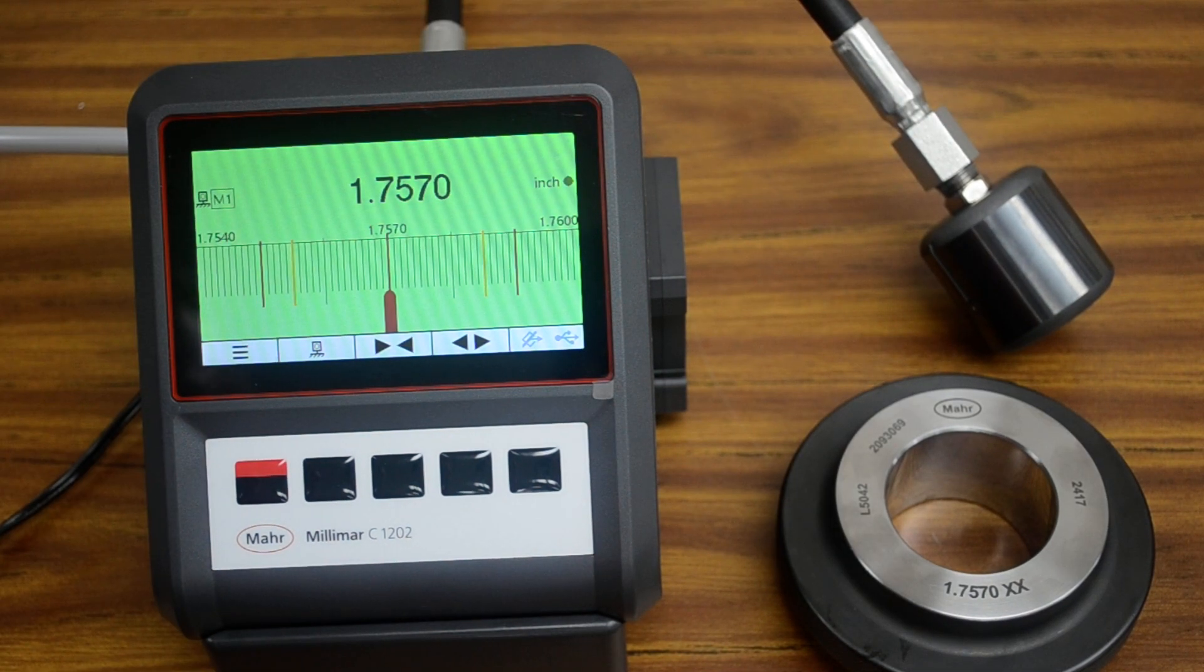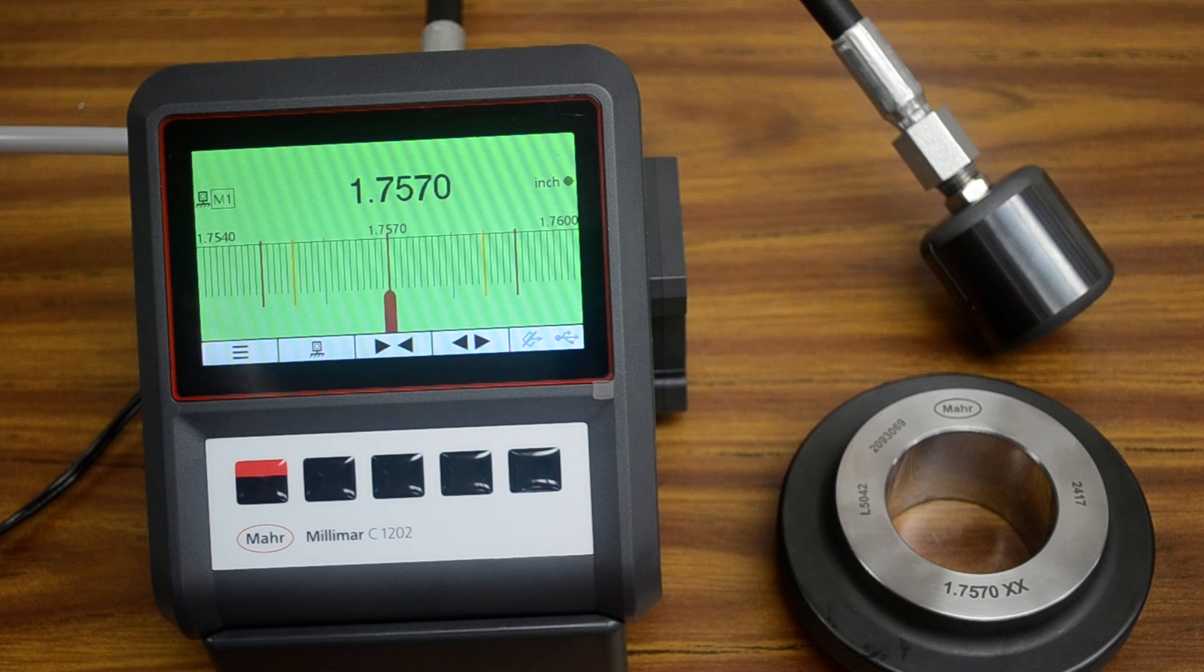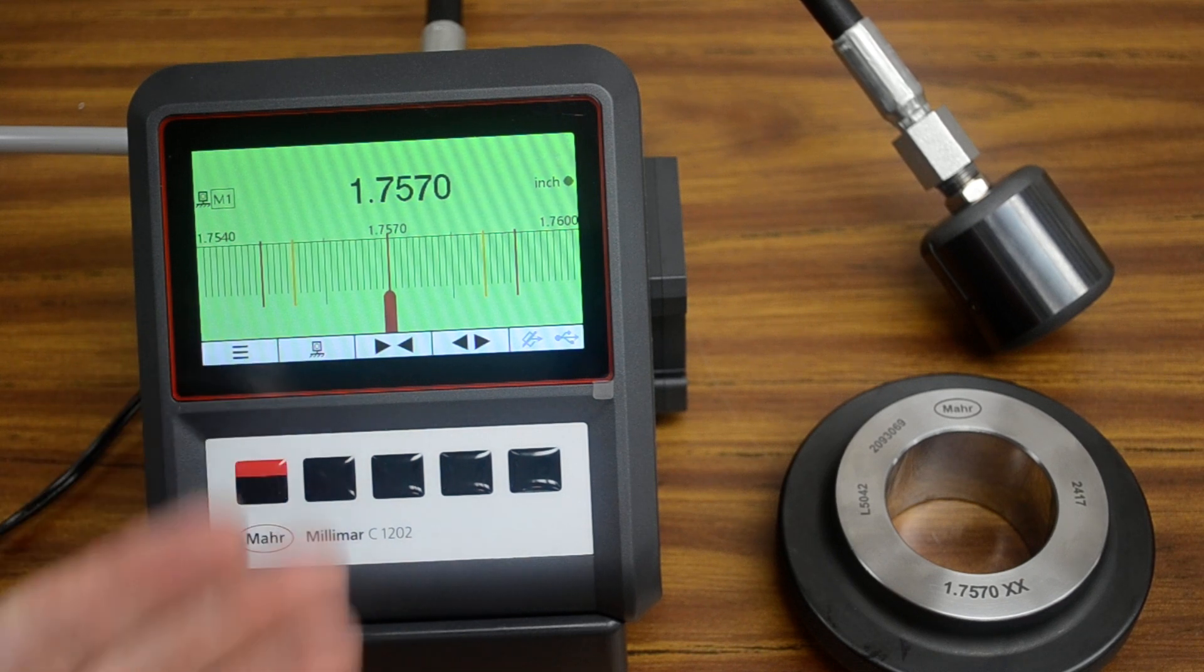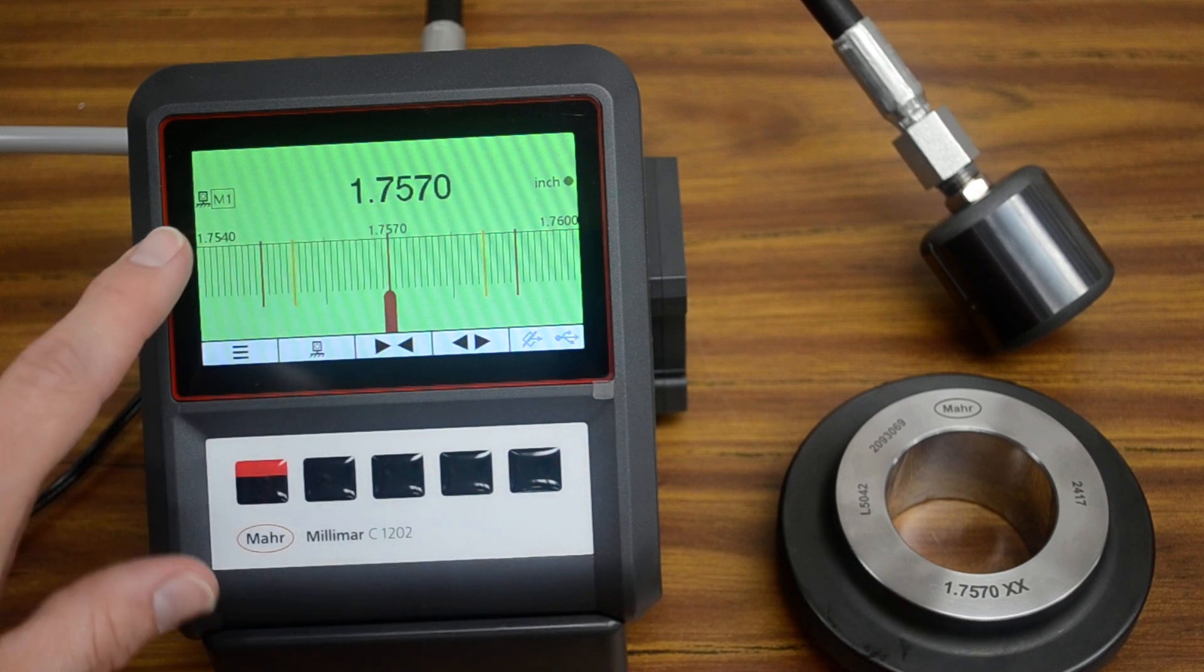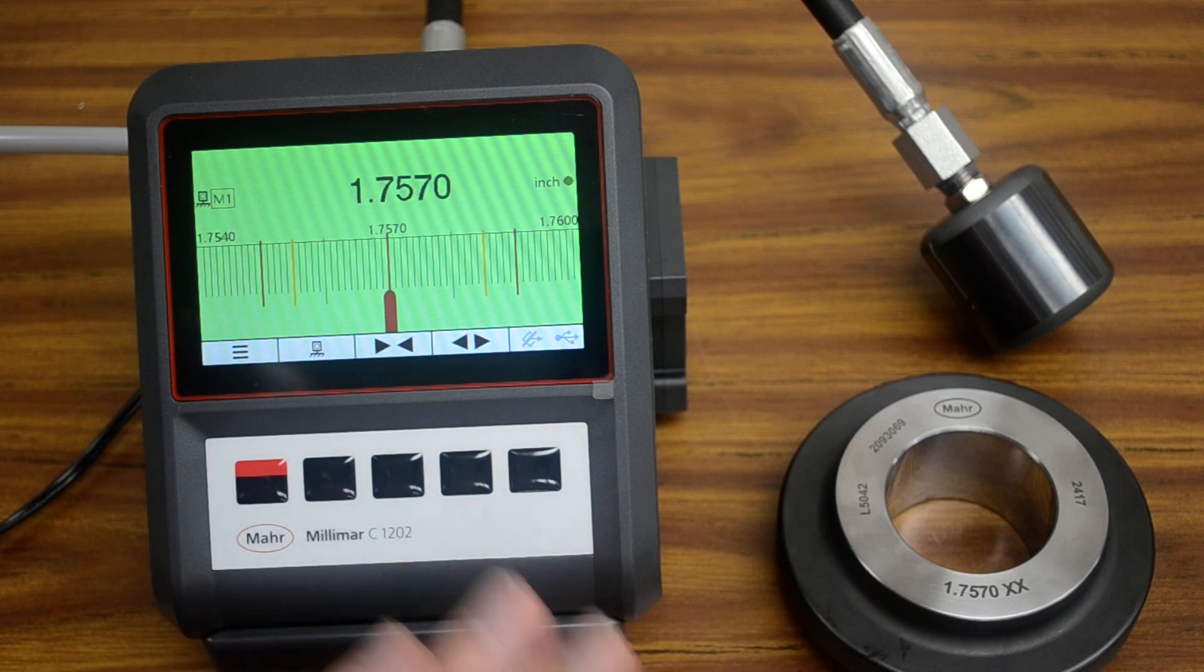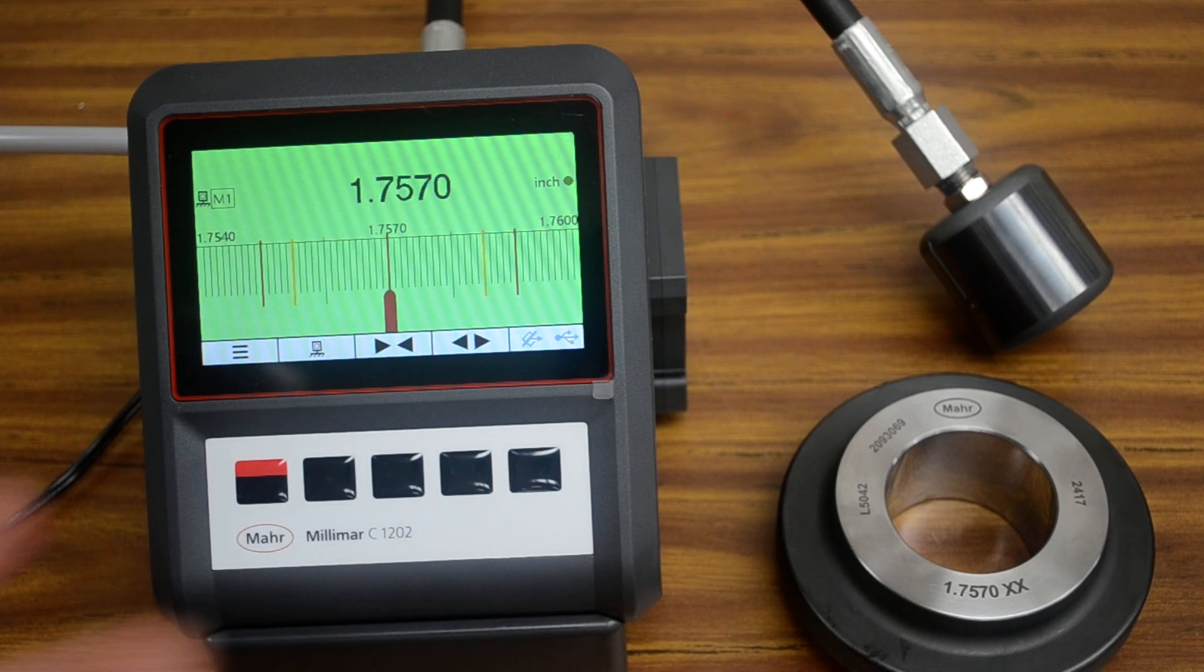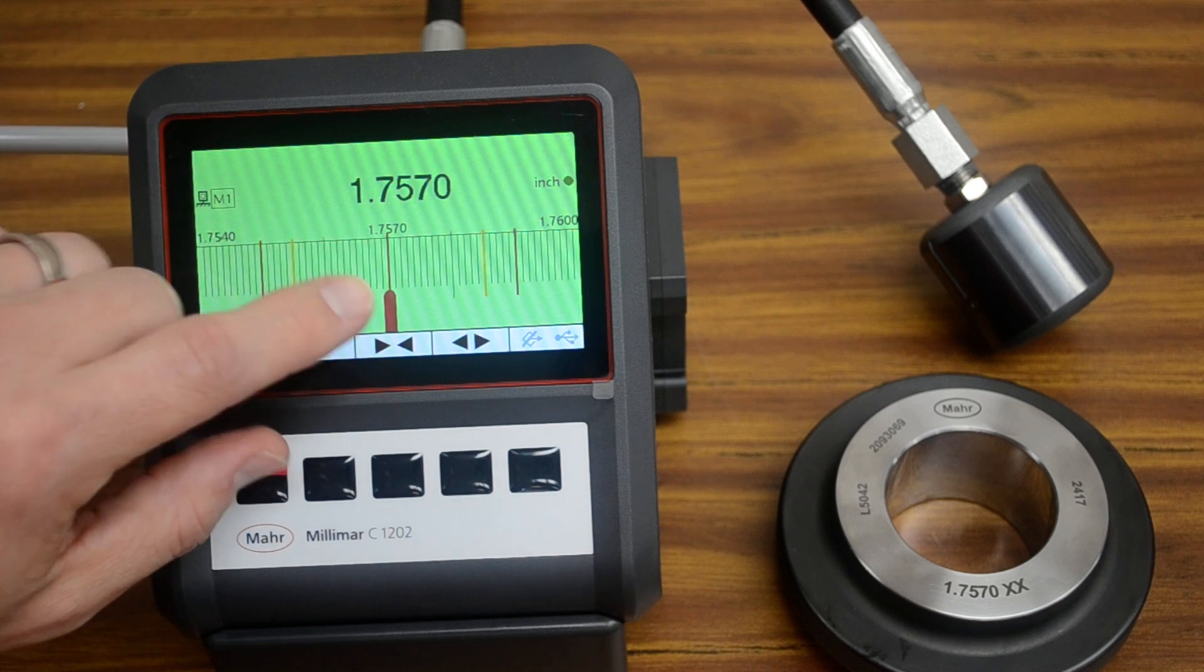Now we come to our electronics. I've already set this up, but I'm going to show you exactly how we do it in the settings. What we're seeing here is our master value, 1-inch 757. This little icon here, the datum symbol, indicates that we have already mastered it to this size. We'll do that again.